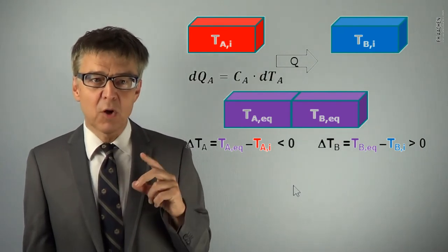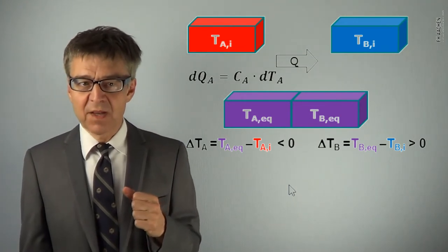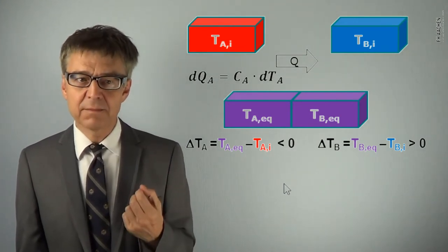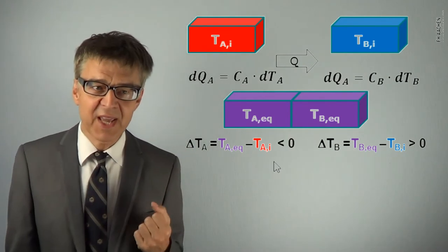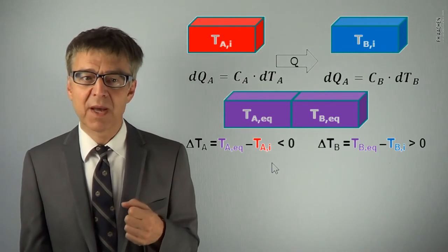However, what is equal is the amount of exchanged heat. The heat Q sub A given off by A is equal to the negative of the heat Q sub B absorbed by B.